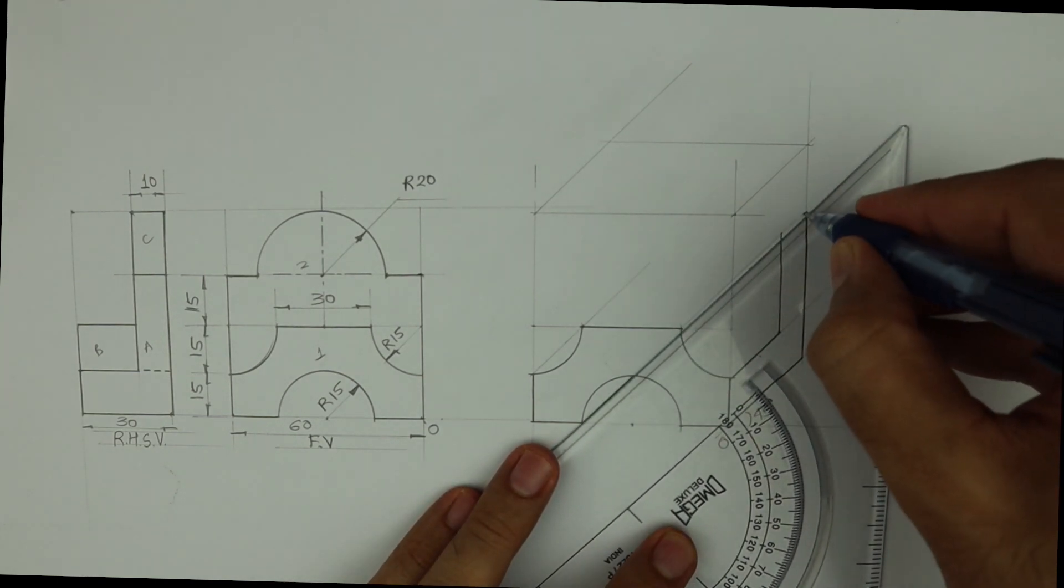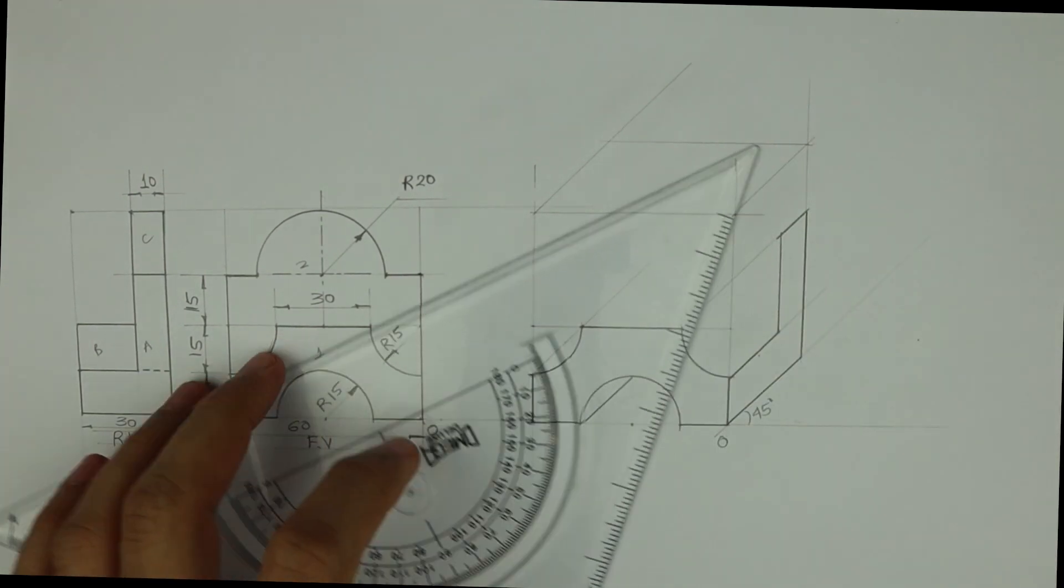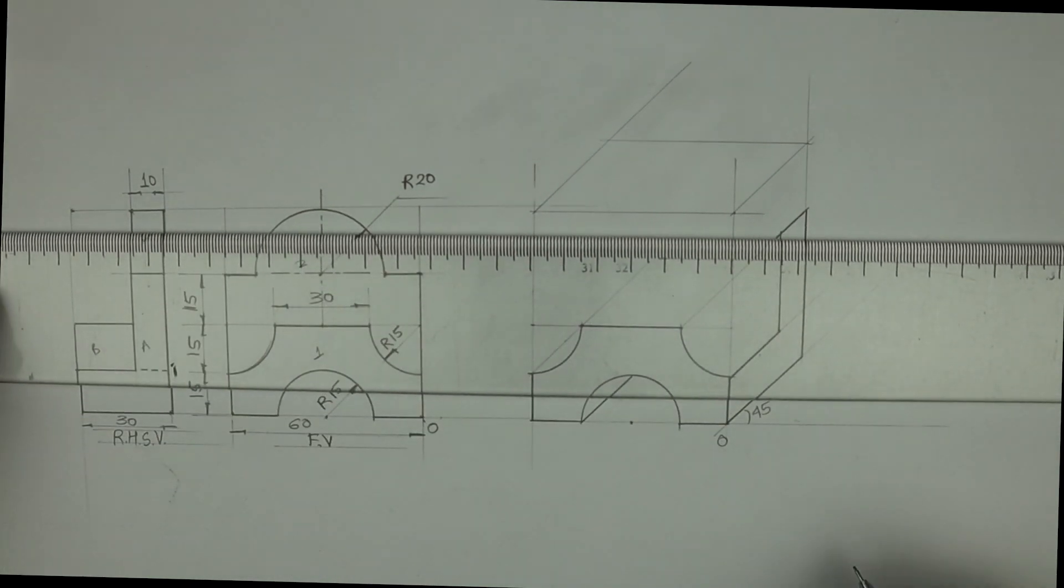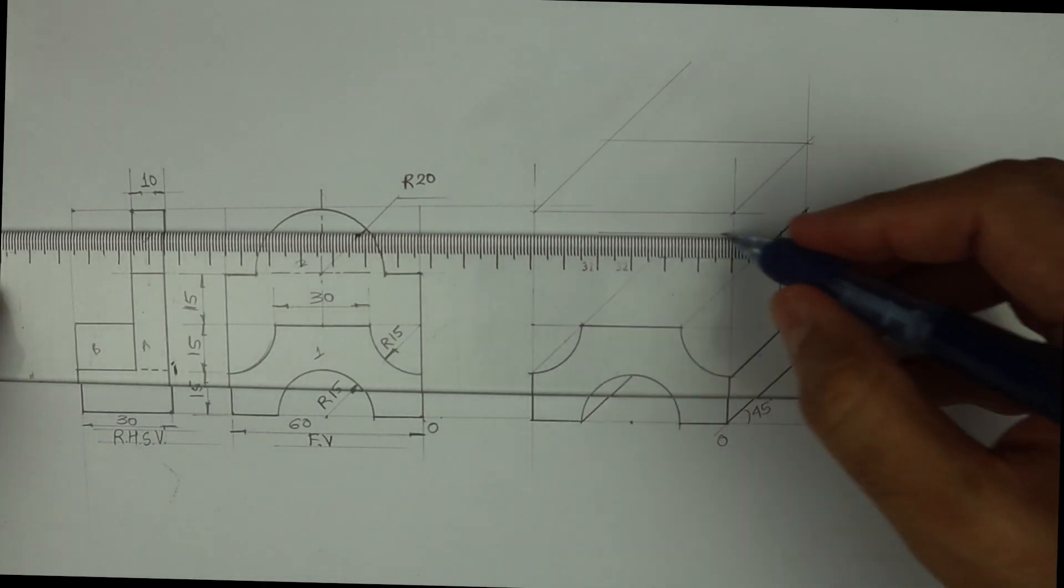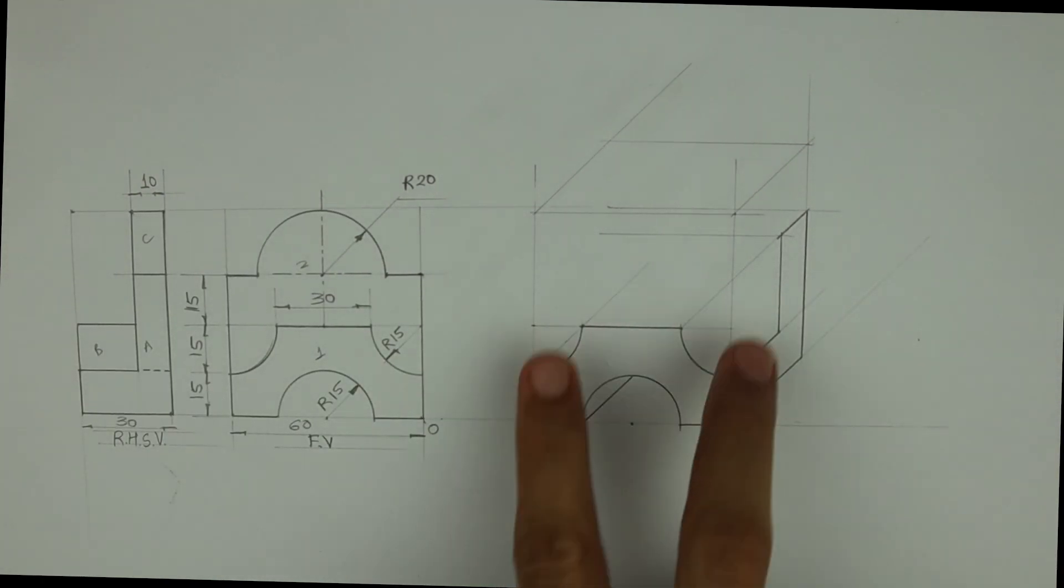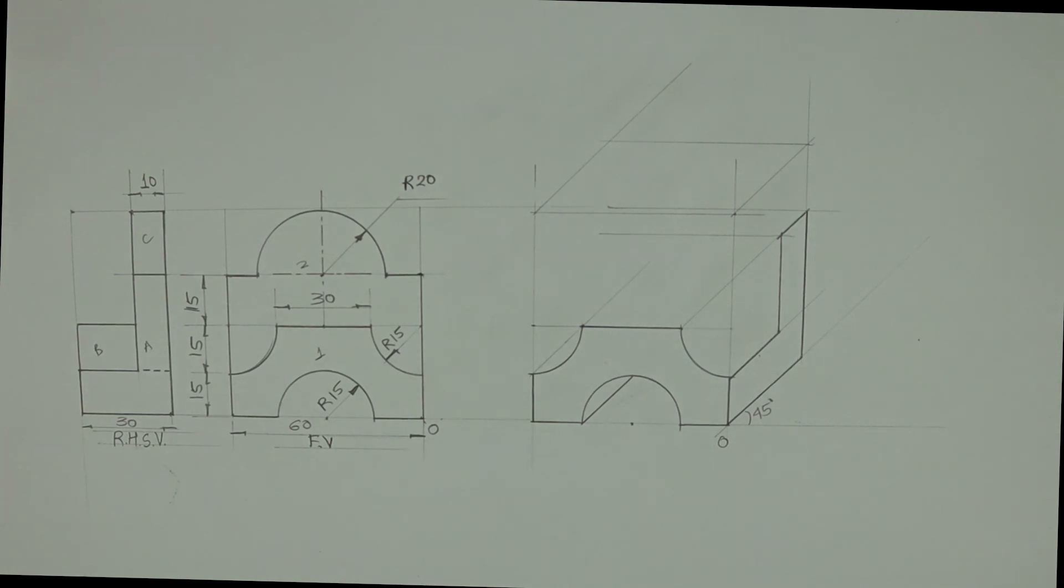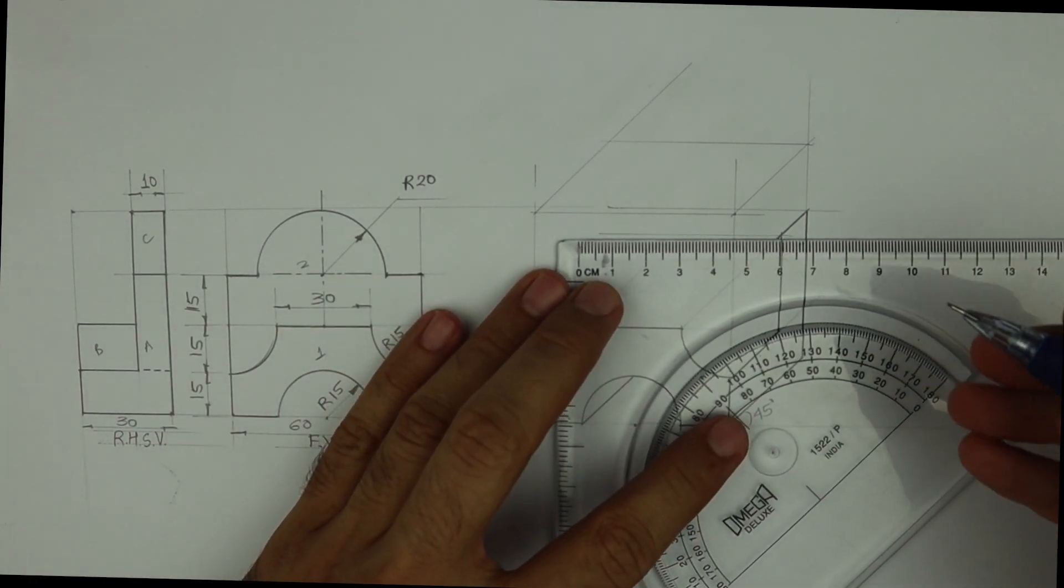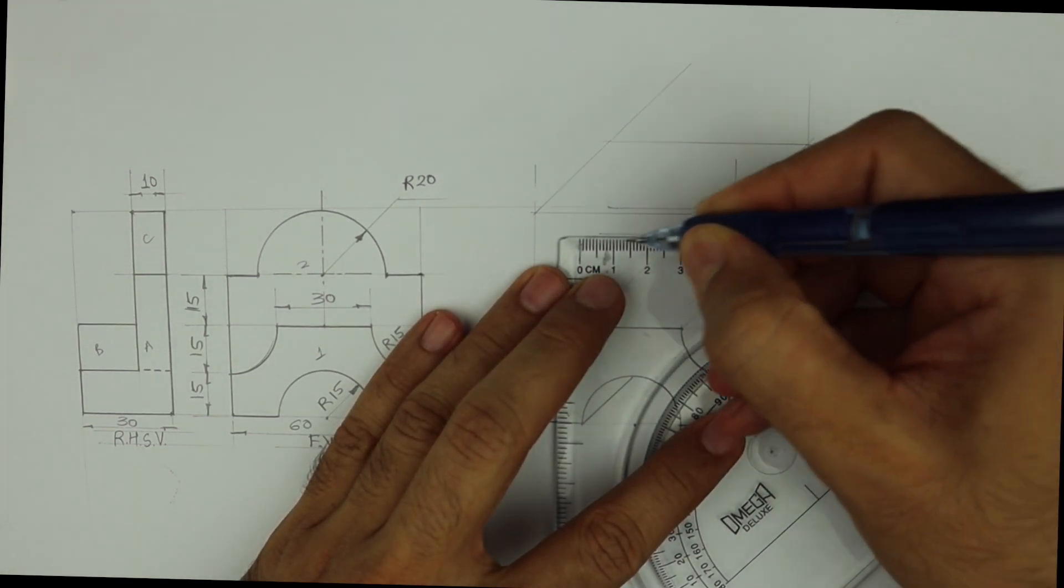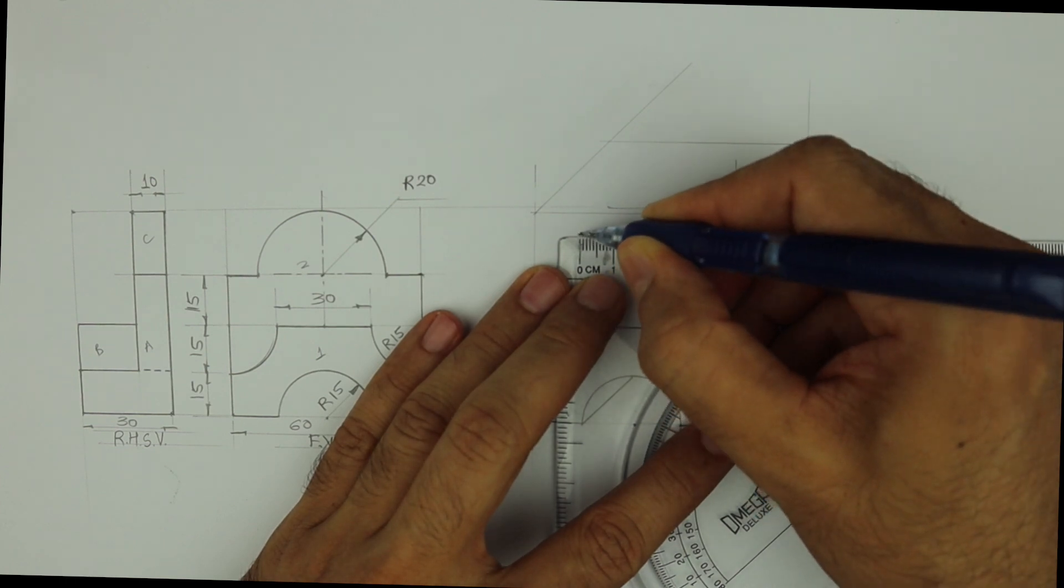Draw this line and this line. Now this is 60, so you can draw 60. You can take 10: 20, 20, 10.